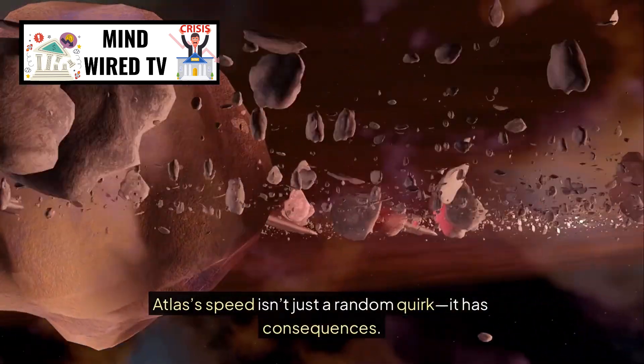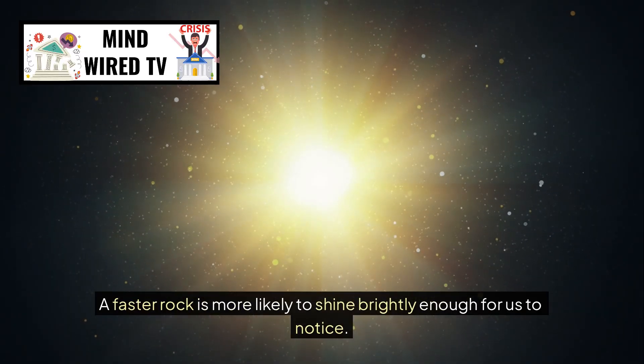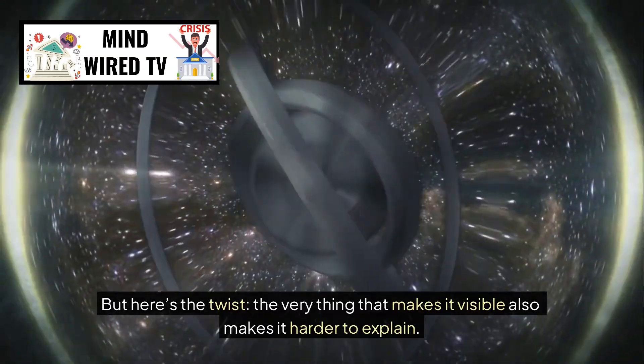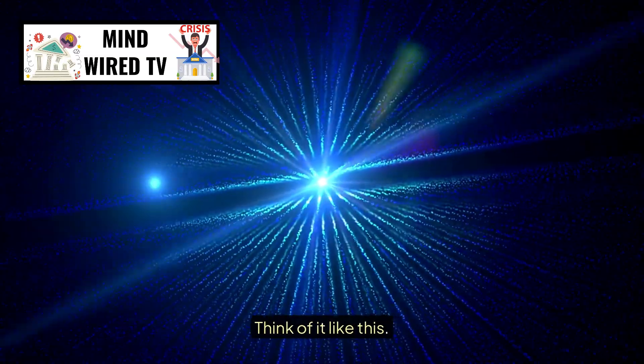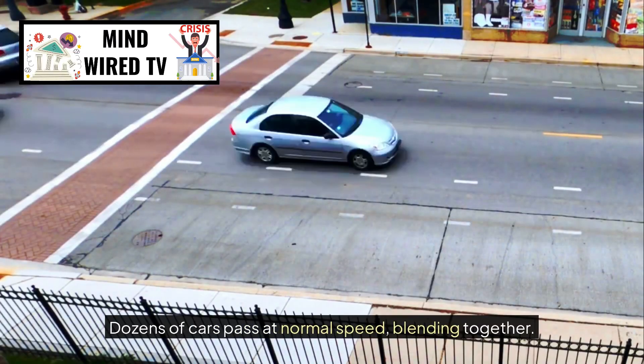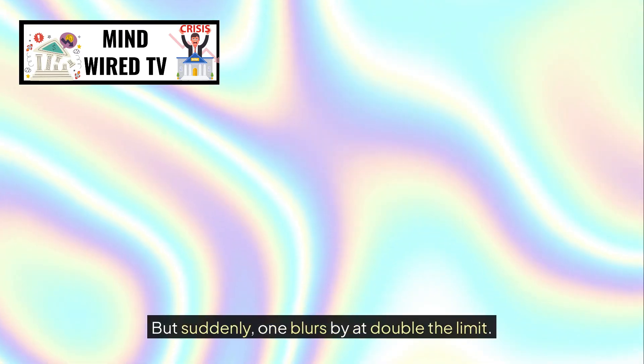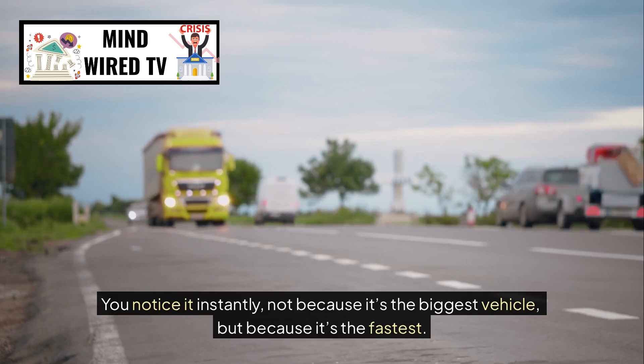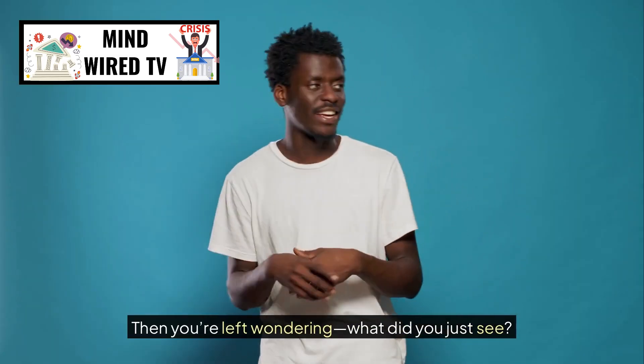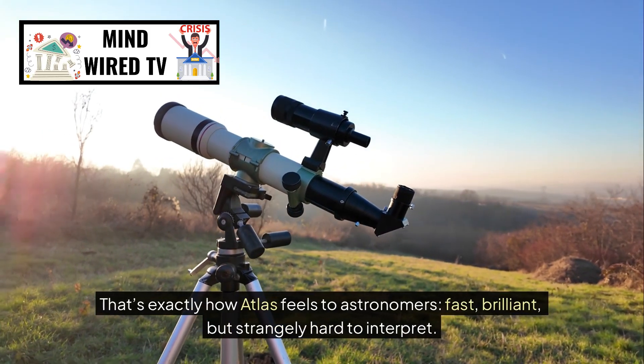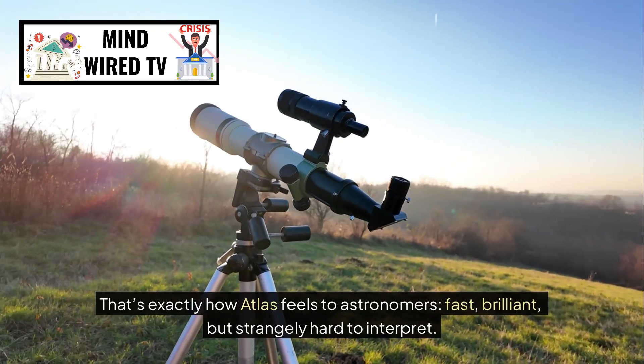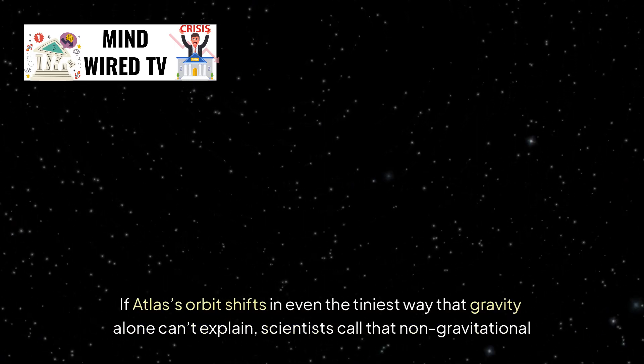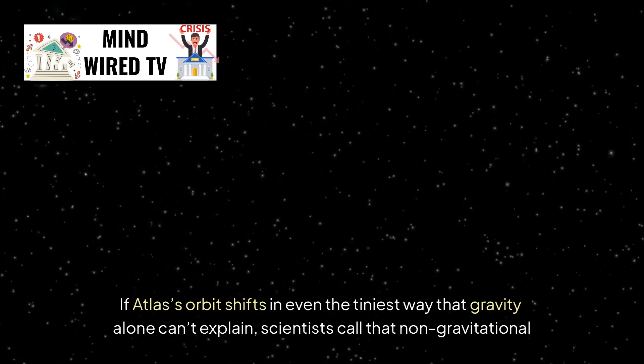Atlas's speed isn't just a random quirk. It has consequences. A faster rock is more likely to shine brightly enough for us to notice. That's why Atlas grabbed our attention in the first place. But here's the twist. The very thing that makes it visible also makes it harder to explain. Think of it like this. You're standing on the freeway. Dozens of cars pass at normal speed, blending together. But suddenly, one blurs by at double the limit. You notice it instantly, not because it's the biggest vehicle, but because it's the fastest. For a moment, your eyes lock on it. Then you're left wondering, what did you just see? That's exactly how Atlas feels to astronomers. Fast, brilliant, but strangely hard to interpret. And inside those numbers, hides a deeper possibility.